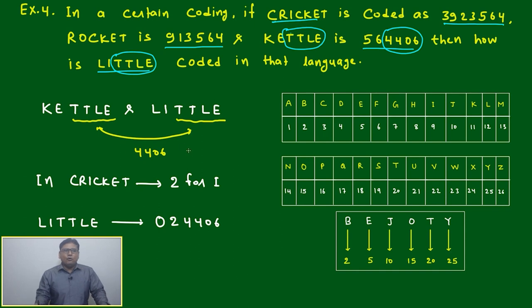4406 will be common. Now in CRICKET, the code for I - in CRICKET the code is 3923564, then we can say I is 2. The I is 2. For LITTLE here we can say it must be 02.